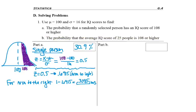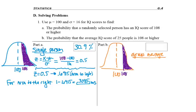So there's a 30.9% chance that if you were to walk up to any person and ask what their IQ is, assuming they've used this test, that their score is 108 or higher. But now let's look at part B. We're asked to find the probability that the average IQ score of 25 people is 108 or higher. So the questions look the same.